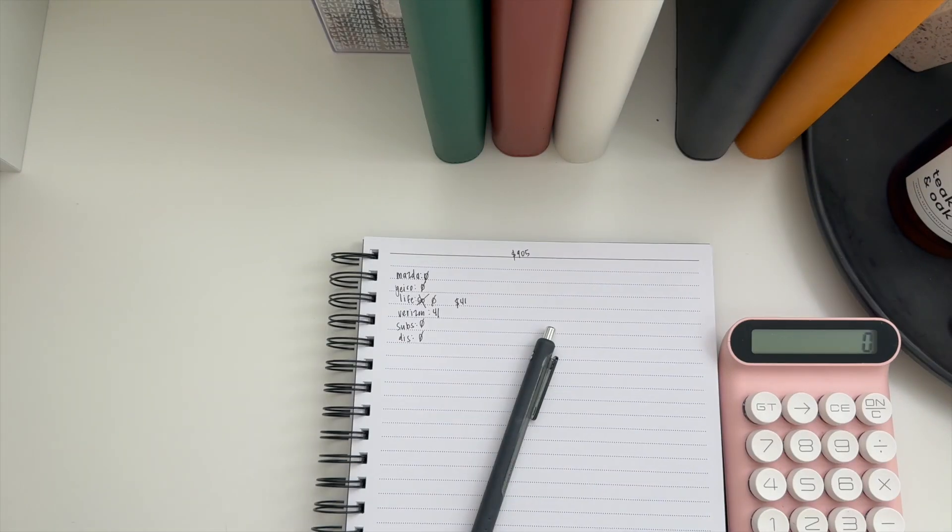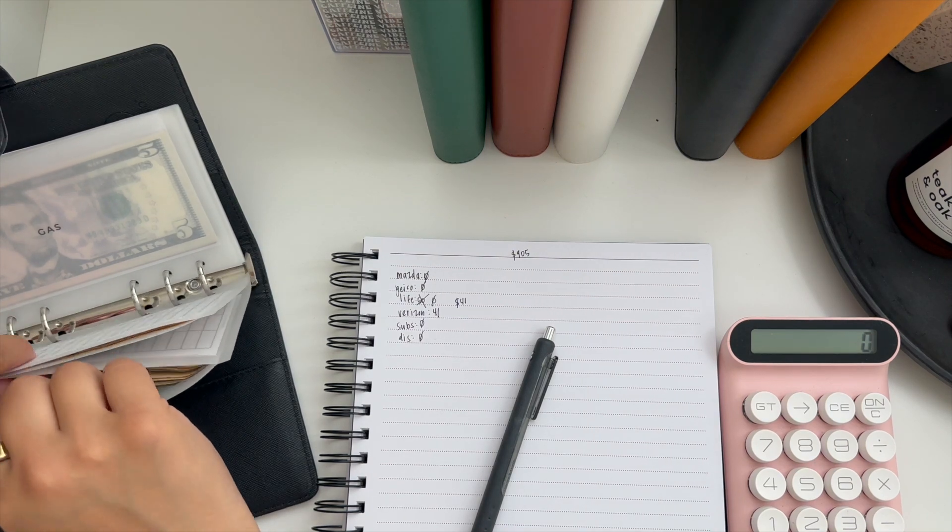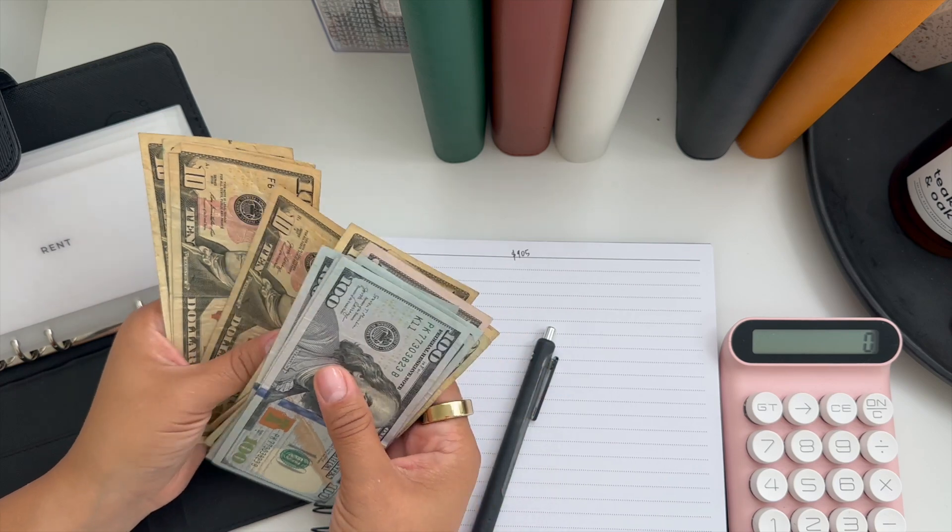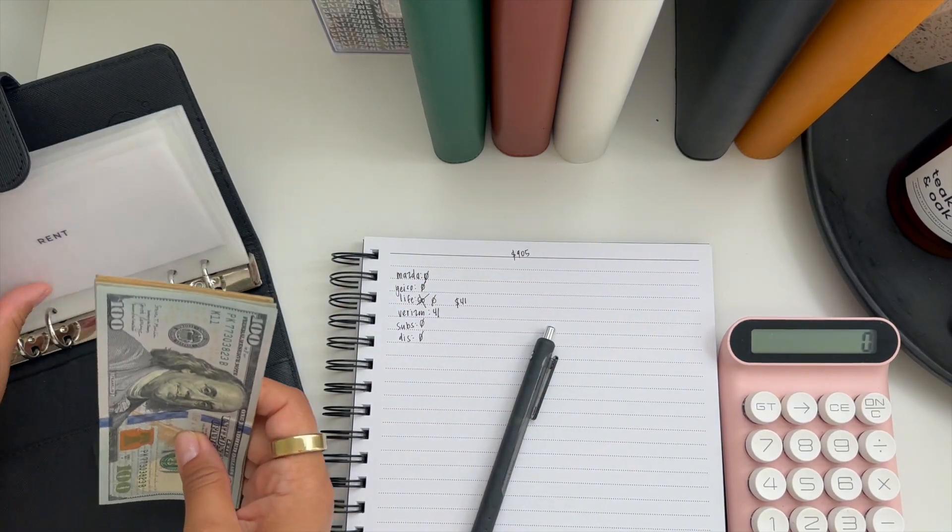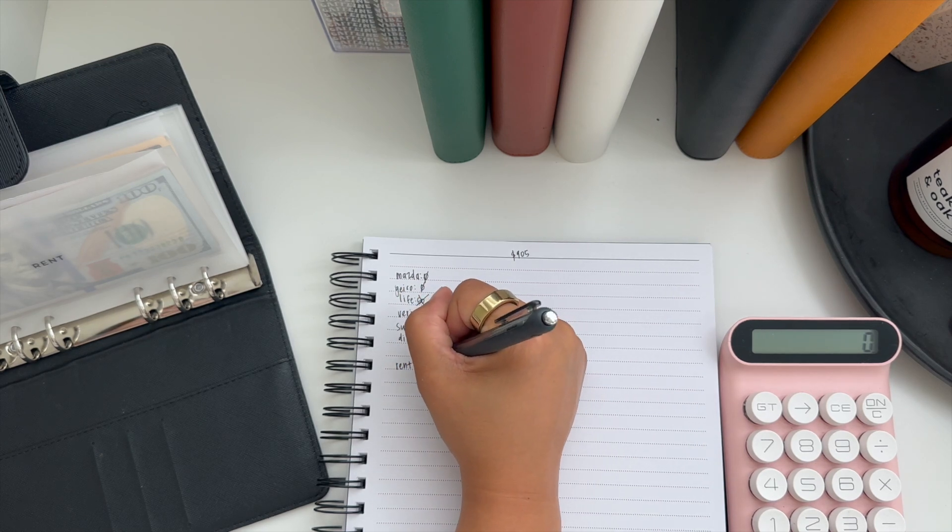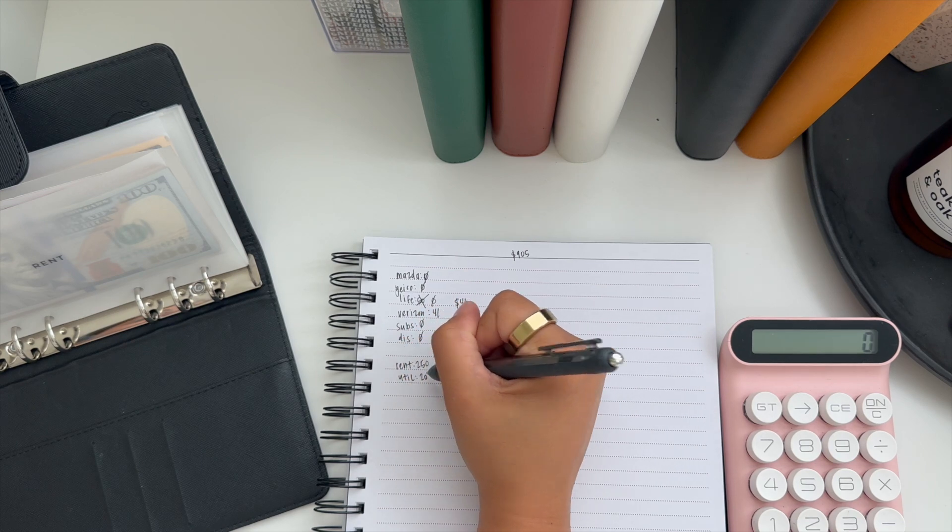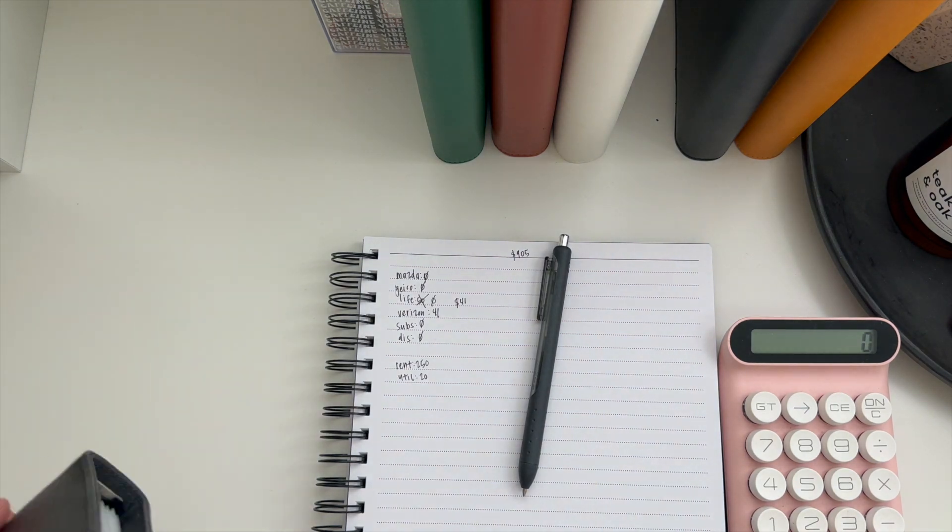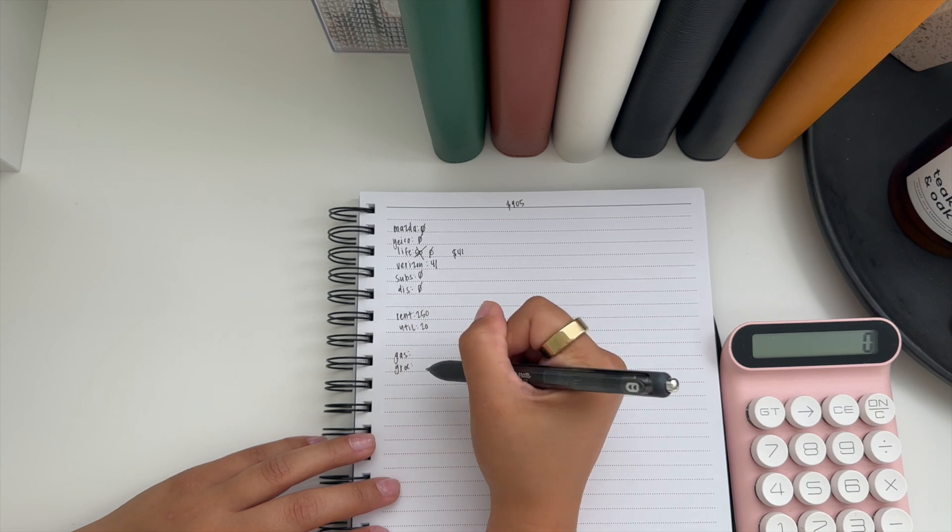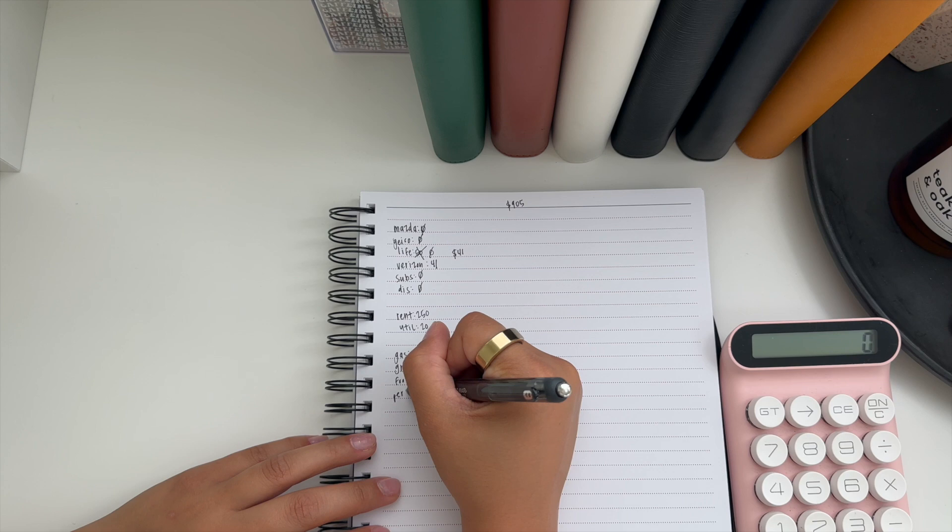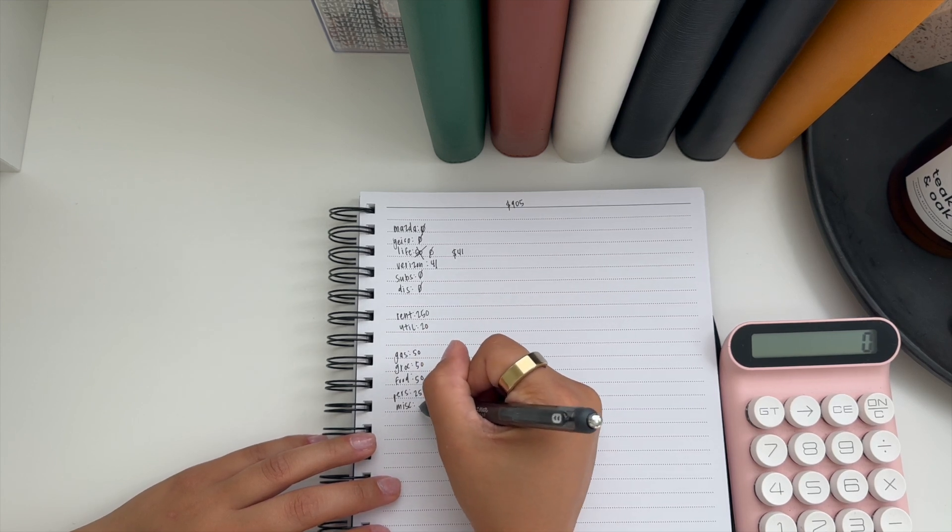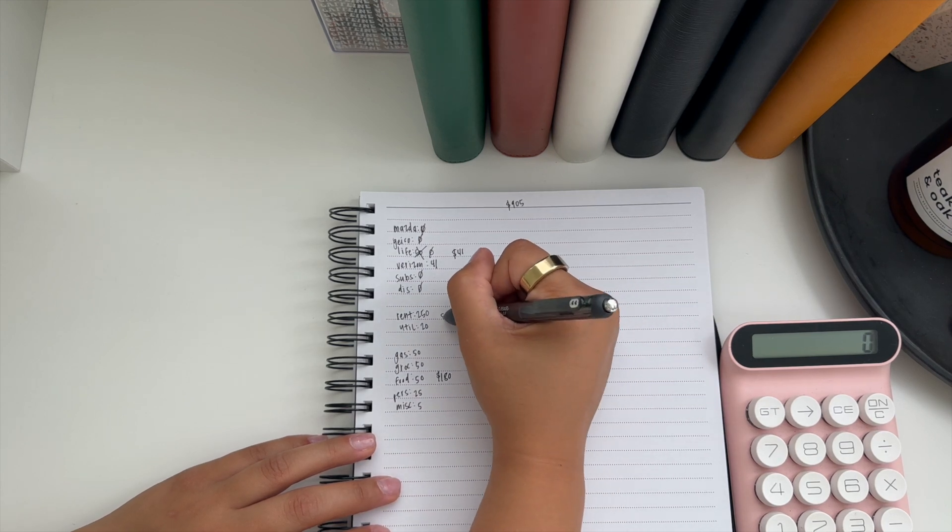And then for rent, so rent will still be getting $250 as well as my utilities. So those are $5 each, so that's $20. I will still give myself my weekly wallet money. So that's gas, groceries, eating out, personal, and miscellaneous. So that is $50, $50, $50, $25, and $5, which totals $180. And these are $270.